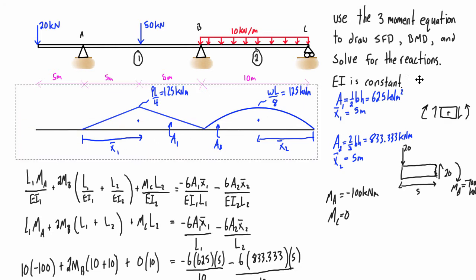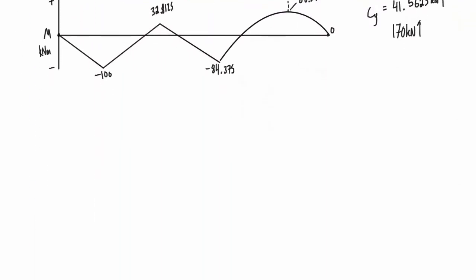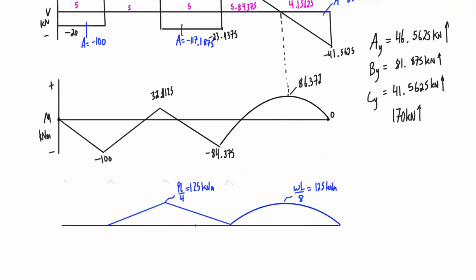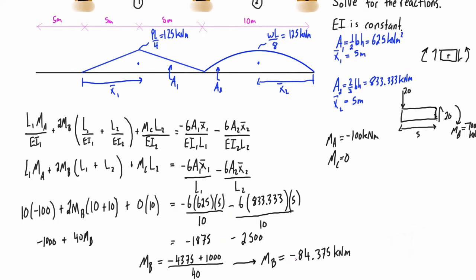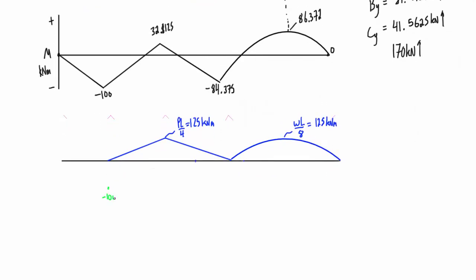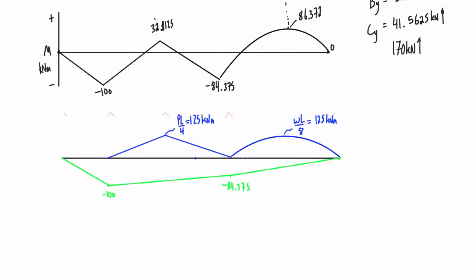Let's bring that diagram down where we have some space. If we plot the moments we calculated early on — before video 2 — we had MA is negative 100 kN·m, MC is 0, and MB is negative 84.375. So coming back down: MA is negative 100, MB is negative 84.375, and MC is 0. We also know the moment at the free end of the beam is zero. The actual bending moment diagram is just the superposition of these two graphs added together.